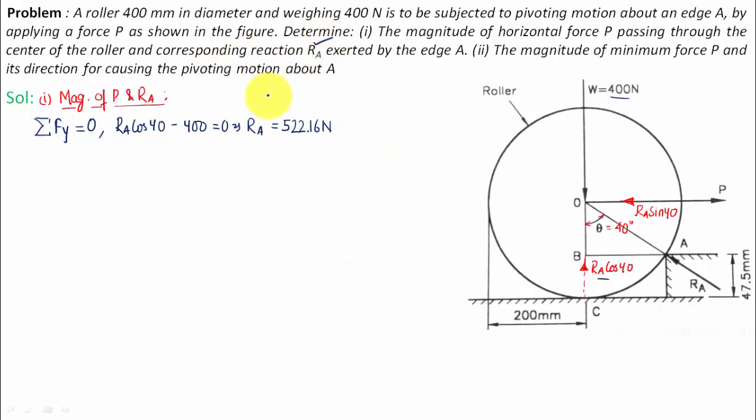Secondly, we have to get this P. How can P be calculated? We have to use this equation of motion: summation of all the forces in X is equal to zero. So this P right hand side positive, this RA left hand side negative. P minus RA sin 40 equals to zero. The value of P will be equal to RA sin 40, which is 522.16 multiplied by sin 40, and this is going to be equal to 335.6 newtons. So that's the value of P for condition number one.